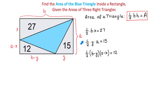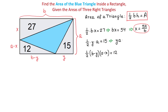So far we have these equations that represent the areas of these triangles. But as you see they have a lot of variables, so we will try to use substitution to eliminate some of them. First we will solve the first equation for x: multiply both sides by 2 to get Bx equals 54, then divide both sides by B to get x equals 54 over B. Then solving the second equation for y: multiply both sides by 2 to get y times A equals 30, then divide by A to get y equals 30 over A.